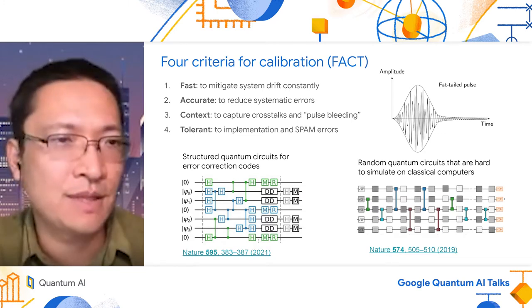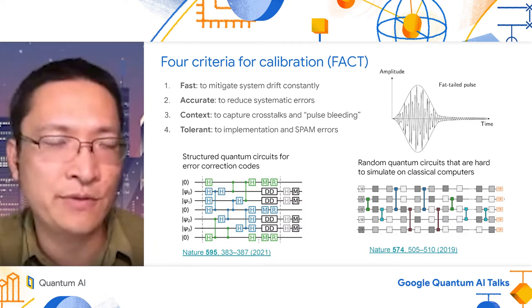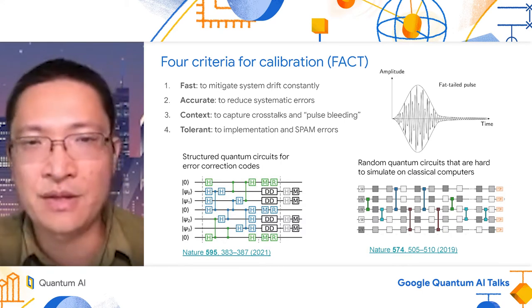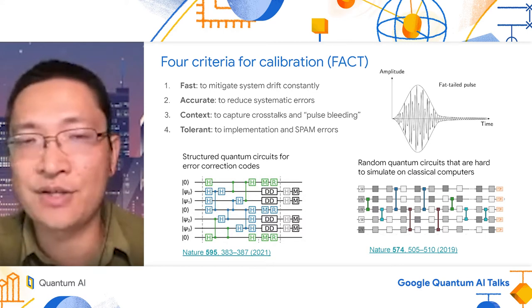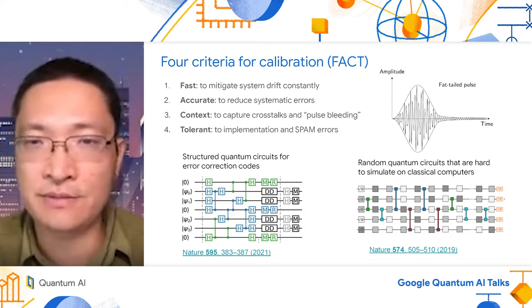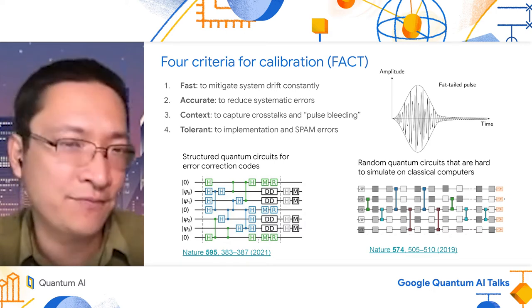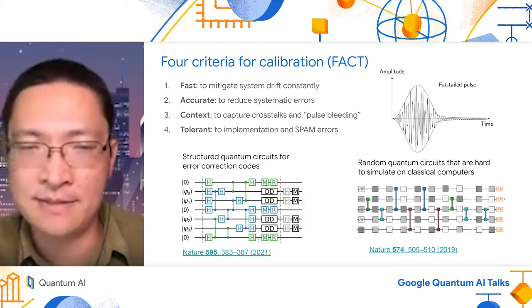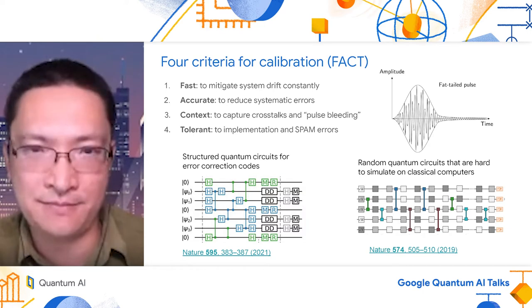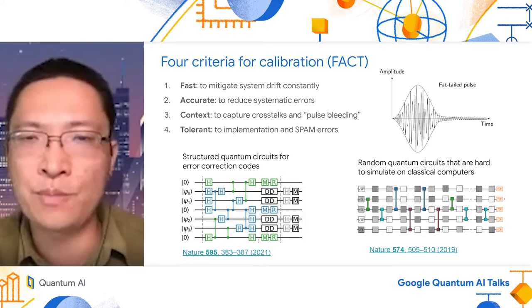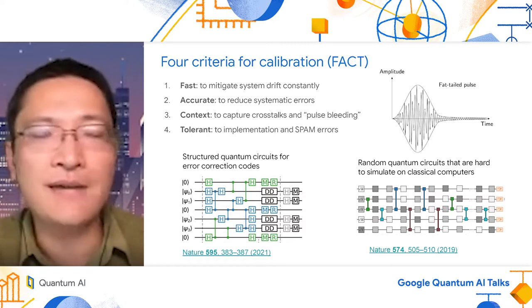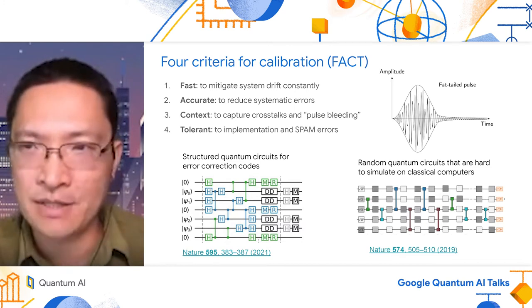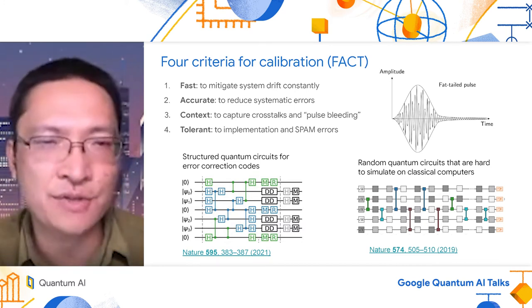Circuits are different. For example, in quantum error correction, we use a very structured circuit where we use Hadamard gate and the CZ gate. Whereas in random quantum circuit, it's not structured. Every gate has a different rotational angle, which has the extra benefits of converting systematic errors to decoherence errors. Therefore, in some sense, a random quantum circuit is easier to implement because one does not have to worry too much about the systematic errors. However, in a structured quantum circuit, one has to calibrate these systematic errors carefully, ideally using a circuit that is of the same structure as the original circuit.